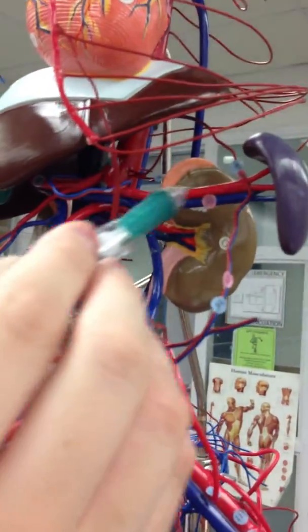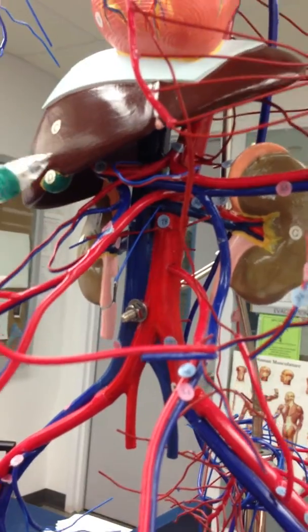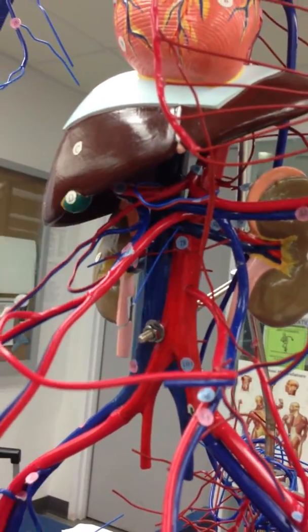The splenic artery as I said is here connected to the spleen and the hepatic, common hepatic is right here connected to the liver which is number 87.